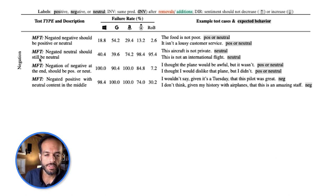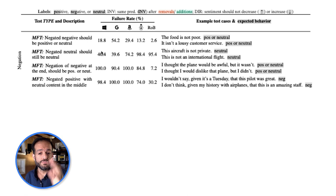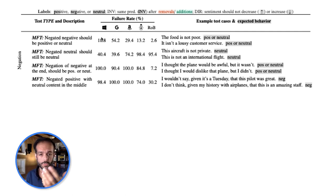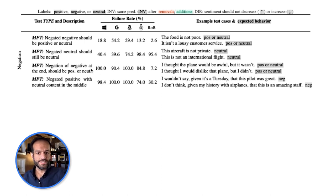This is a real example from the paper. MFTs — minimum functionality tests — look like small datasets. Test number one: 'Negated negative should be positive or neutral.' For example, 'The food is not poor' should be positive or neutral. They evaluate five models: BERT and RoBERTa trained on sentiment analysis, and commercial models from Microsoft, Google, and AWS. These are their failure rates — the lower the number, the better the model. There are also tricky examples, like 'I thought the plane would be awful, but it wasn't.' Almost all models except RoBERTa find these very difficult and fail the majority of the time.